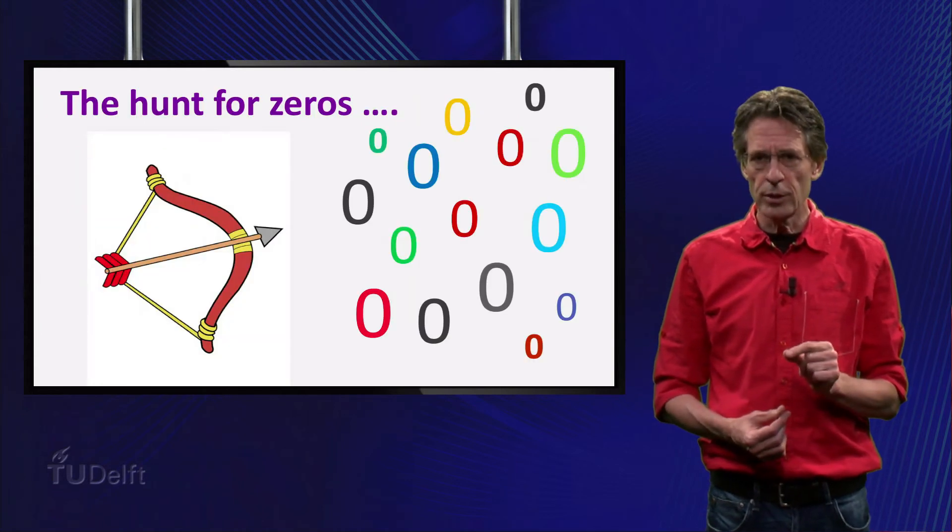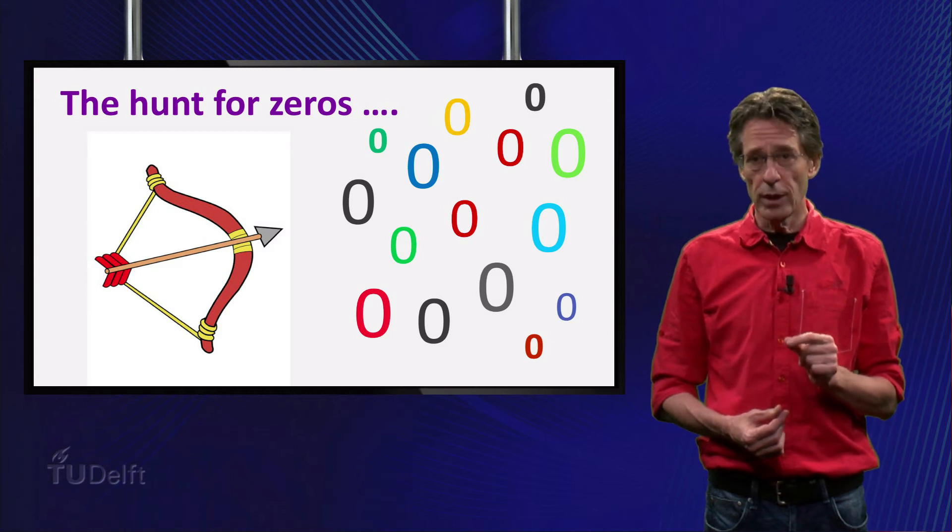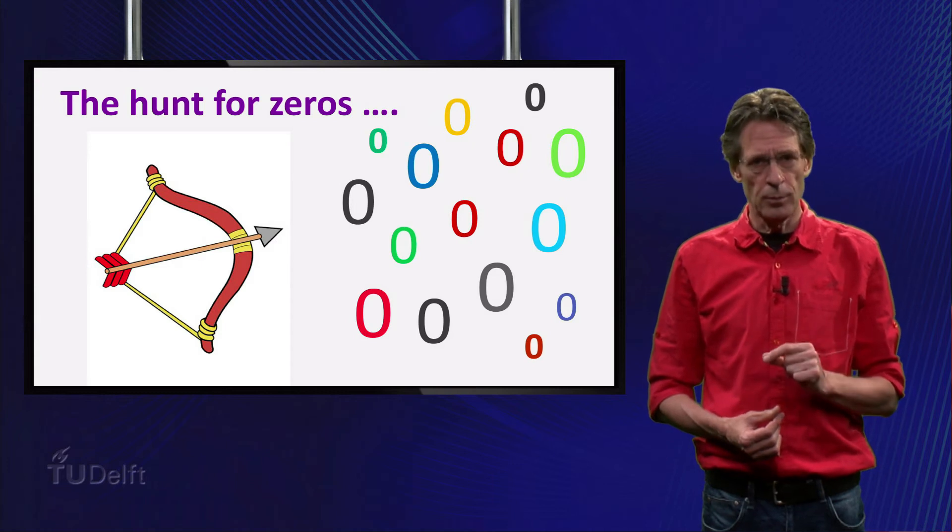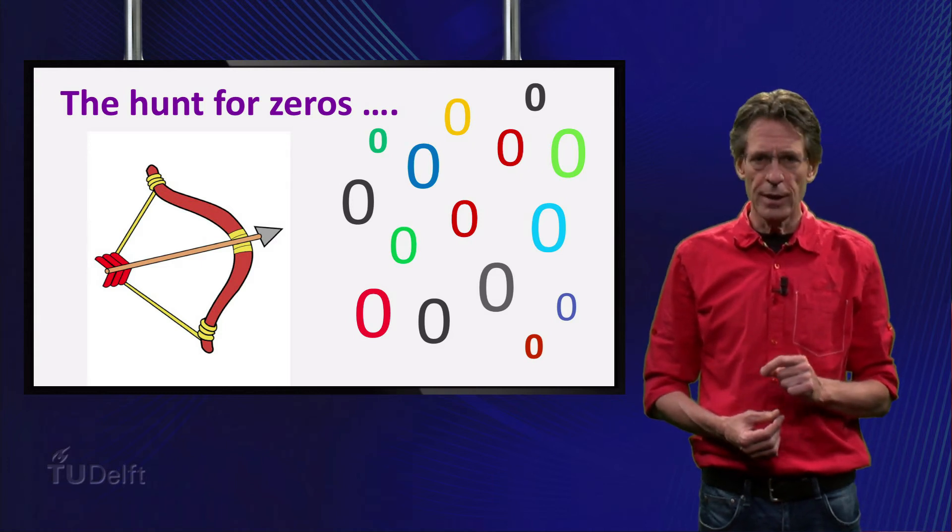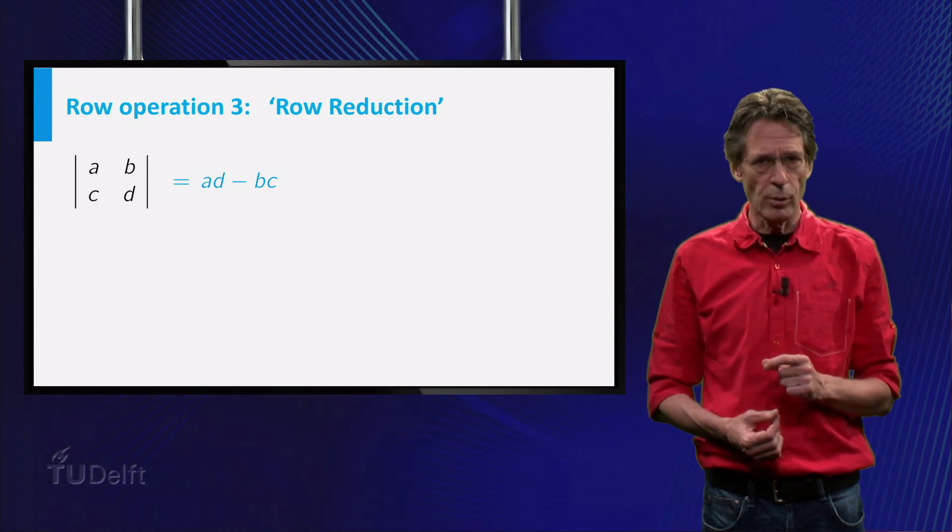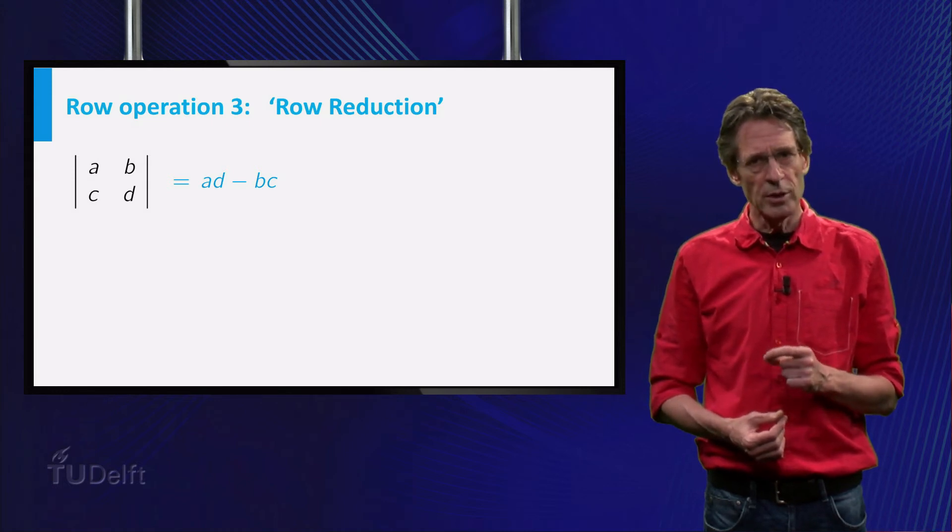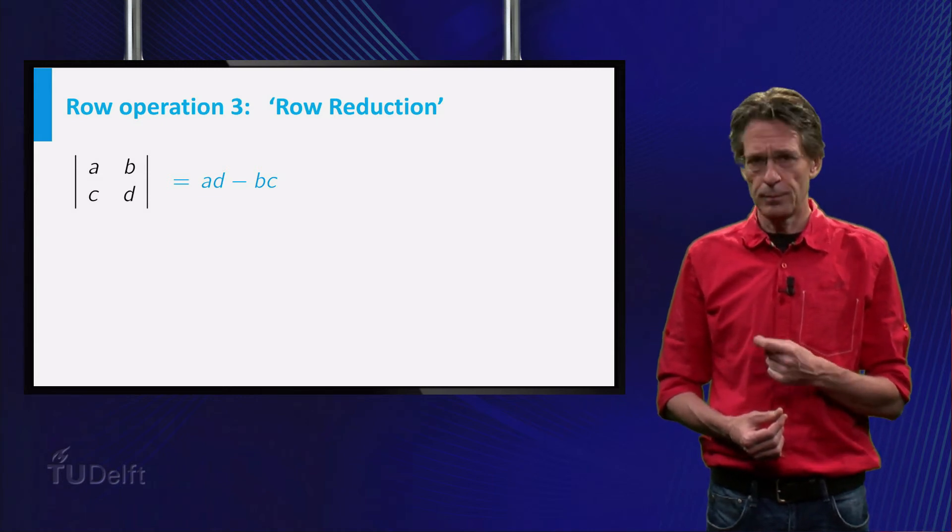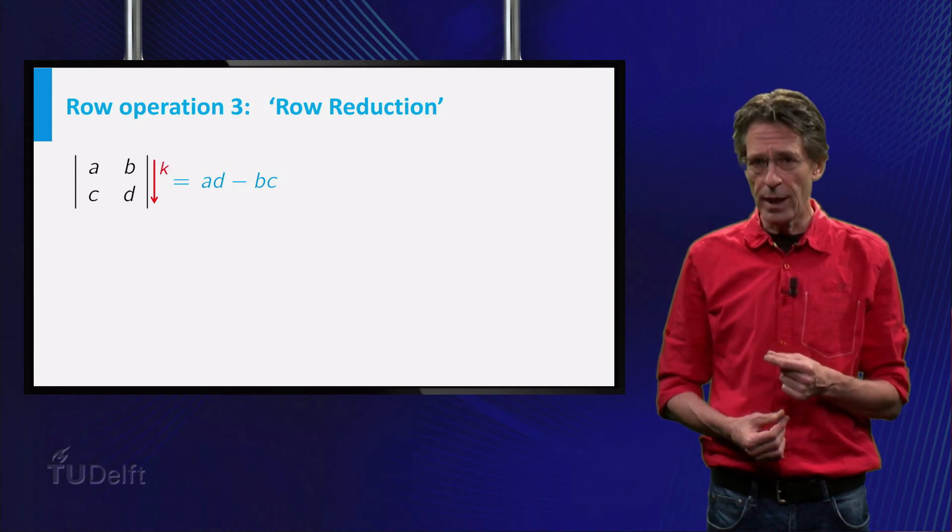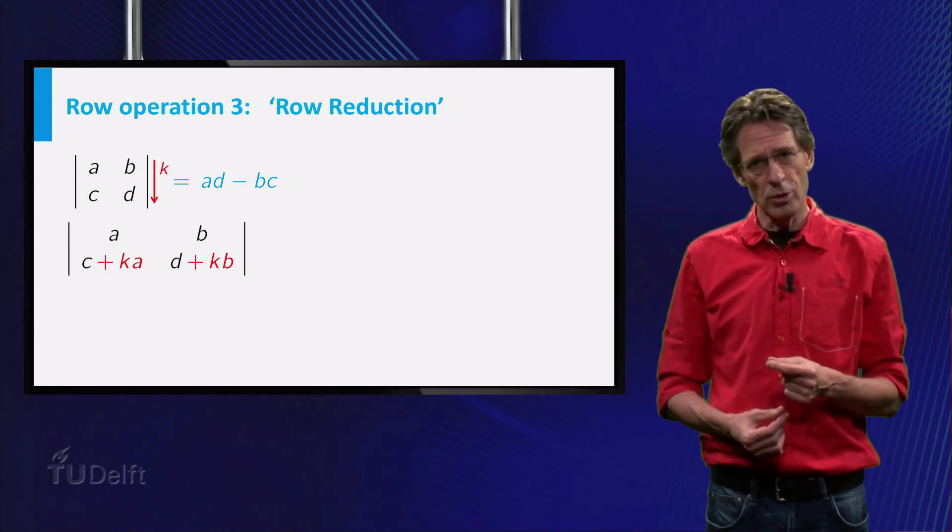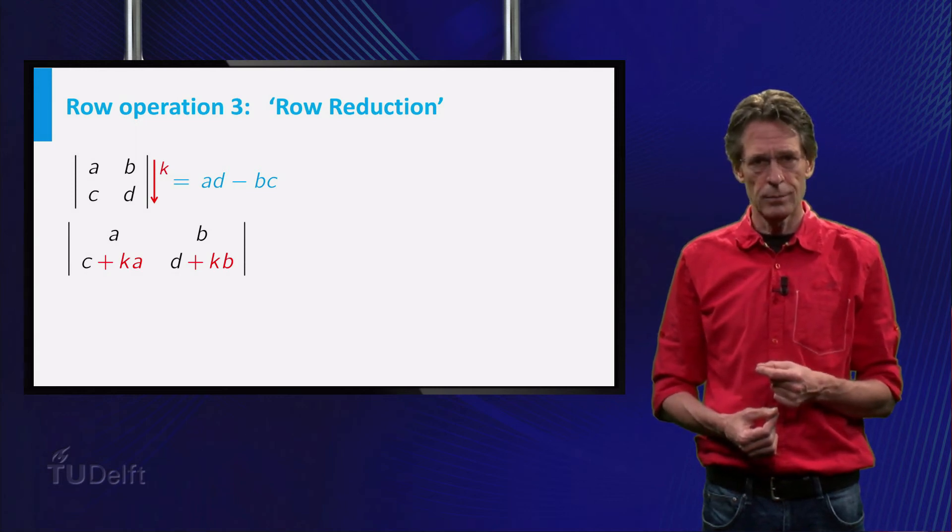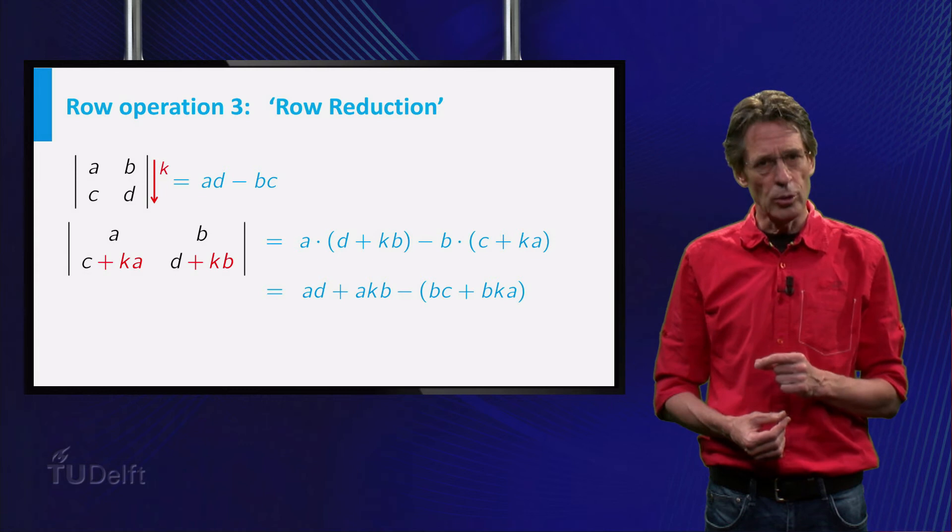The third row operation is the most important rule in the hunt for zeros, adding a multiple of one row to another row. When solving a linear system, this already was the most important row operation when we wanted to reduce the augmented matrix to echelon form. Have a look at the 2x2 example on the slide. Add the multiple k of the first row to the second row, and find the determinant of the new matrix. As you see, there are two terms that cancel.